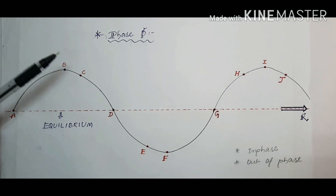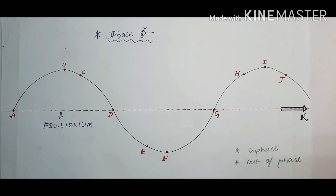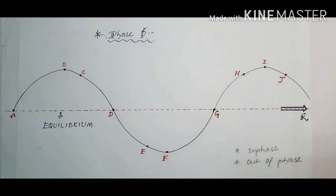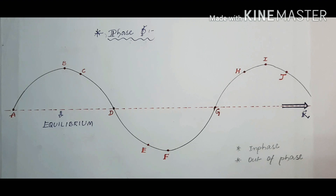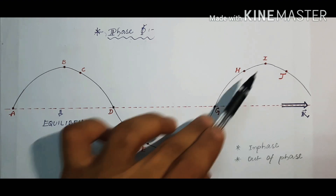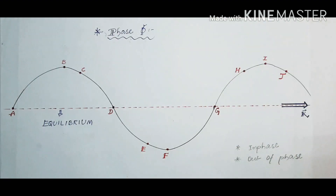Point B and point I are in phase with each other because at both points the wave is going down. Now considering point F and point I: at point F the wave is going up but at point I the wave is going down, so they are completely out of phase — the phase difference between them is 180 degrees.